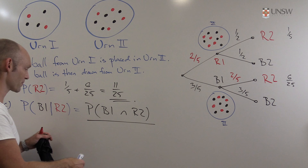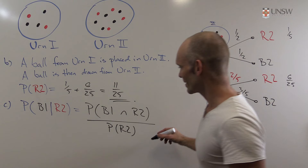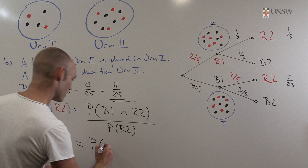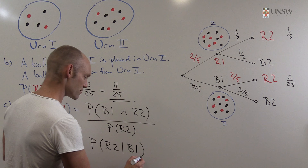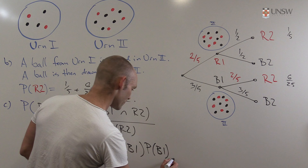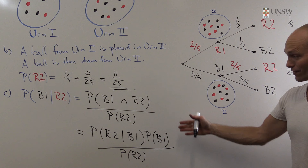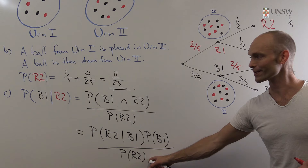We can use Bayes' law. Writing out the definition of conditional probability: P(B1 | R2) = P(B1 and R2) / P(R2). We can transform the numerator: P(B1 and R2) = P(R2 | B1) × P(B1). Dividing by P(R2) gives us Bayes' rule. The denominator P(R2) is the sum we calculated in part B — it's 11/25.